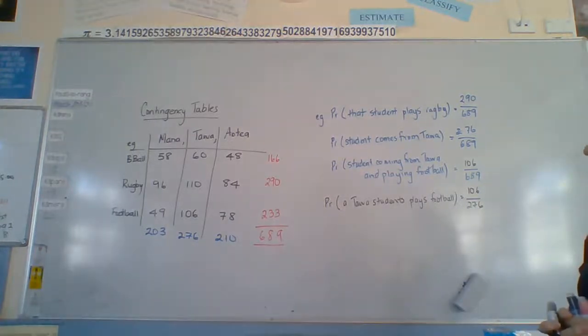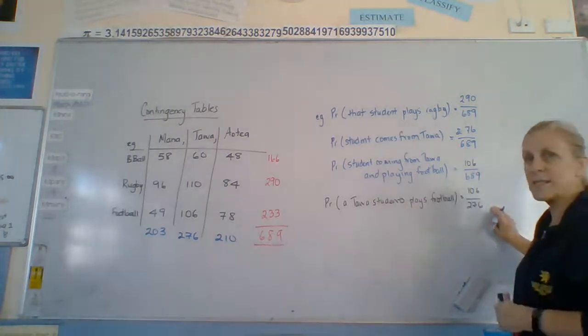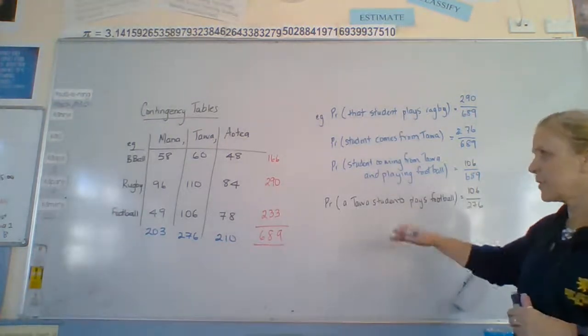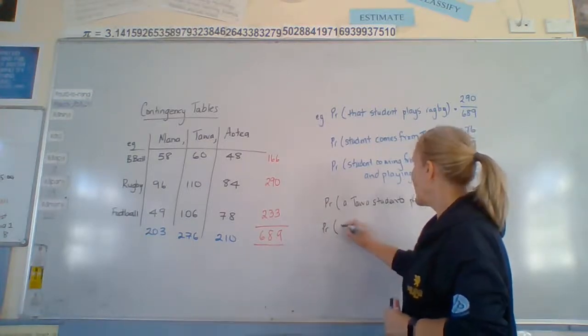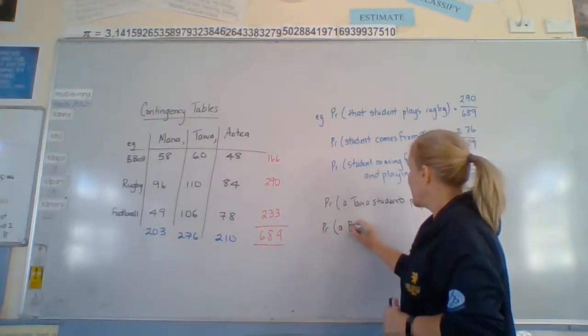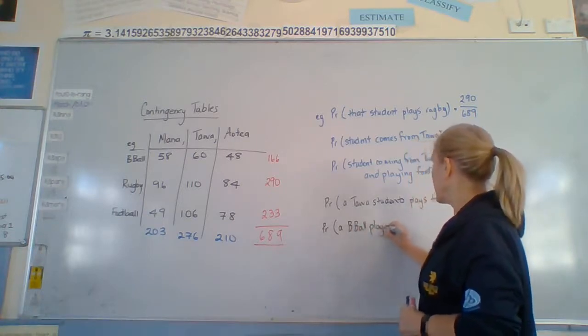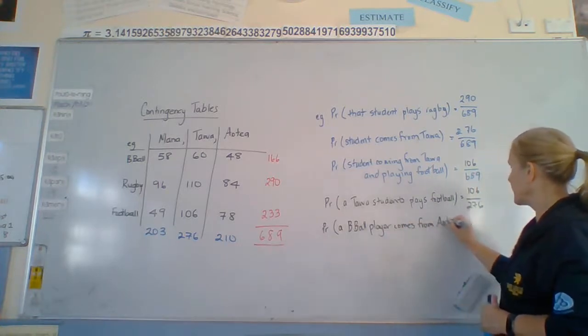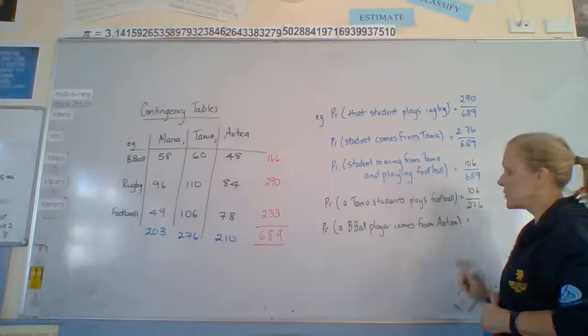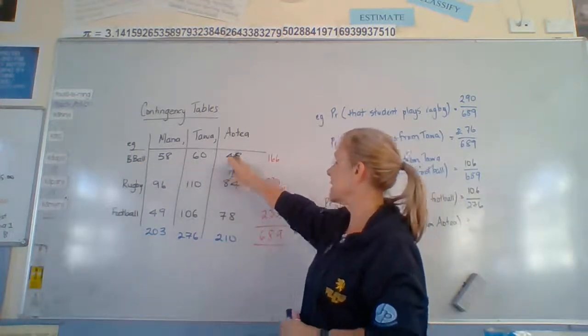Alright. So the denominator has gone down because of our choice that we've already been given, the Tawa student. Or we can have something like probability that a basketball player comes from Aotea. So we're interested in the basketball row here. And we're interested in Aotea.